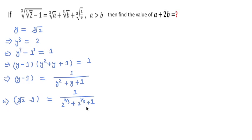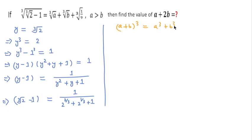After that, we know the formula: (a plus b)³ equals a³ plus b³ plus 3a²b plus 3ab².